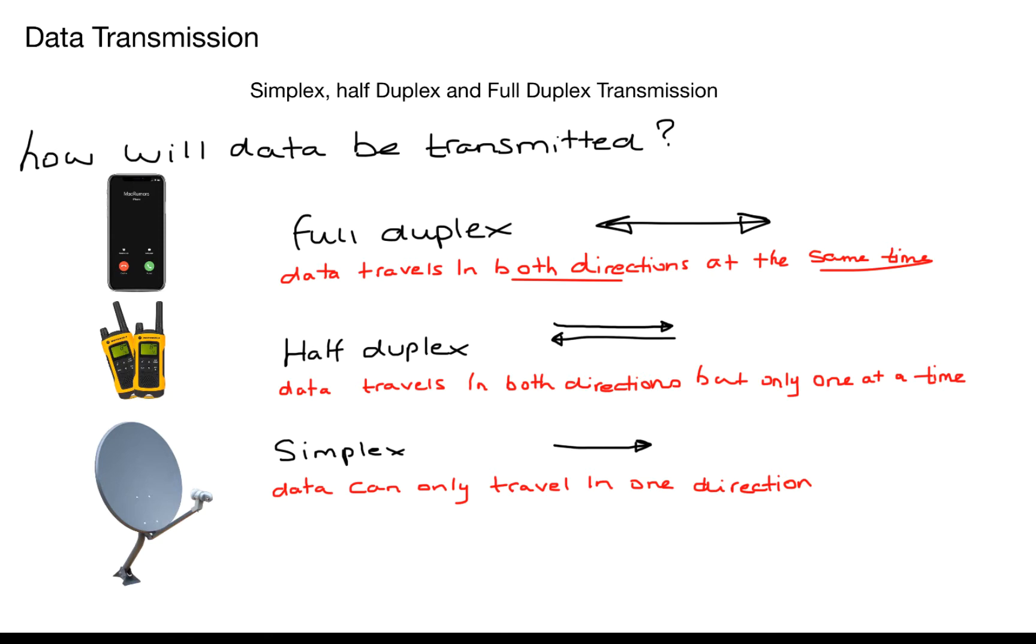In a half duplex transmission we'll use walkie-talkies because data can be transmitted and then it gets received at the other end and then we transmit our message back to somebody else. So at any one time we can't communicate with each other in a two-way fashion. It must transmit the data to one side, get received, and then we must transmit back so that the other person can hear what we've said.